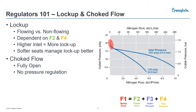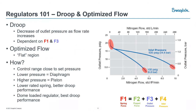On the flip side of this graph, we'll focus on choke flow. Choke flow is when the regulator is fully open — at this point you're not really regulating pressure; it acts more like a restrictive orifice. On both ends of this flow curve we really don't want to be operating. So where do we want to be? That moves us on to our next two segments: droop and optimized flow.